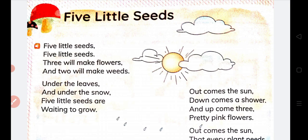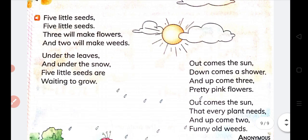So this poem is about seeds, which you call in Hindi. Five little seeds, five little seeds — three will make flowers and two will make weeds. So there are five little seeds here, and there will be three flowers and two will make weeds.